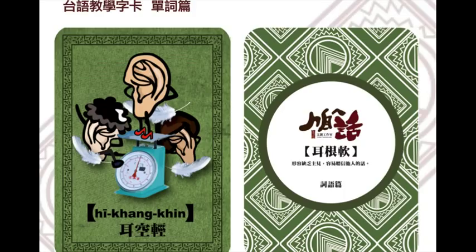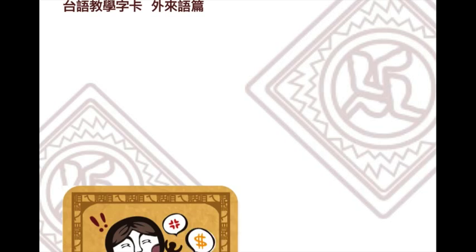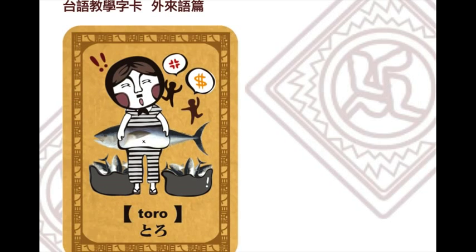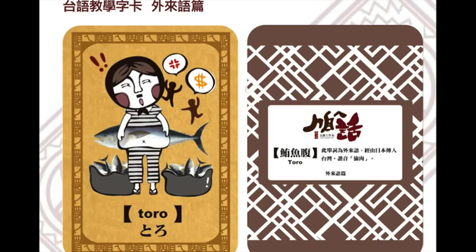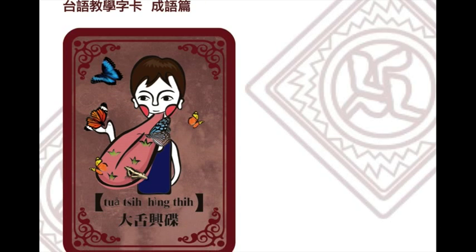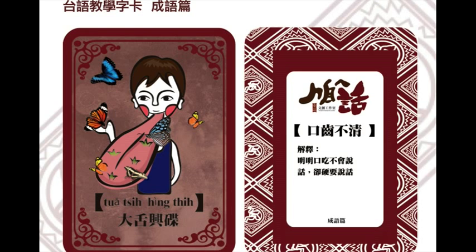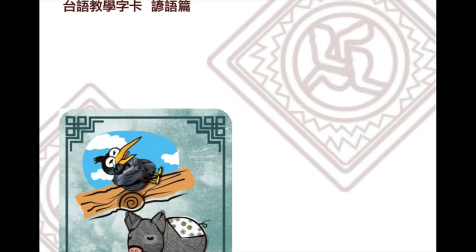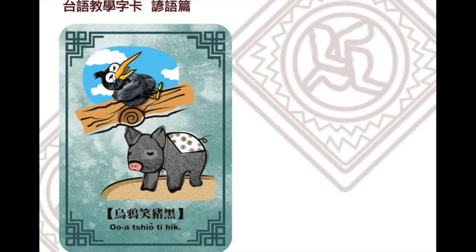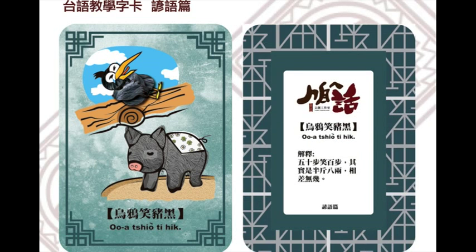特色示例：台语教学字卡单词篇「耳根软」，意指缺乏主见、容易听信他人的话。外来语篇透露尾语；成语篇「大鸡映尖」口齿不清；谚语篇「欧阿笑地欧」，即五十步笑百步；特例篇亦有收录。